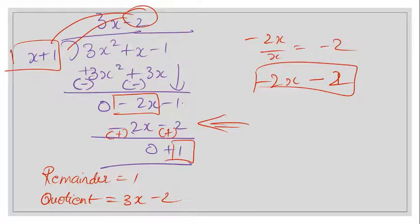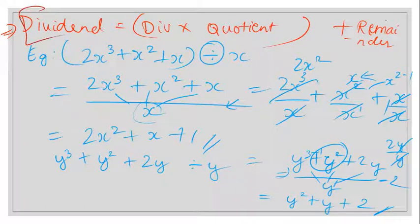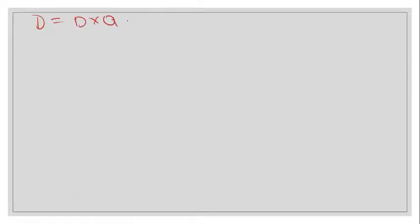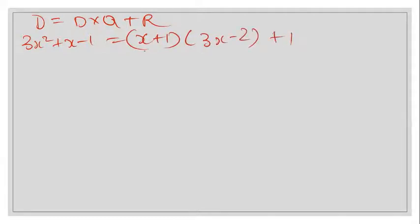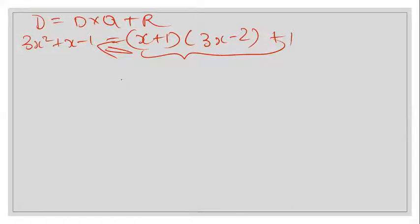Using our formula: dividend = divisor × quotient + remainder. So 3x² + x - 1 = (x + 1)(3x - 2) + 1. This confirms the result.